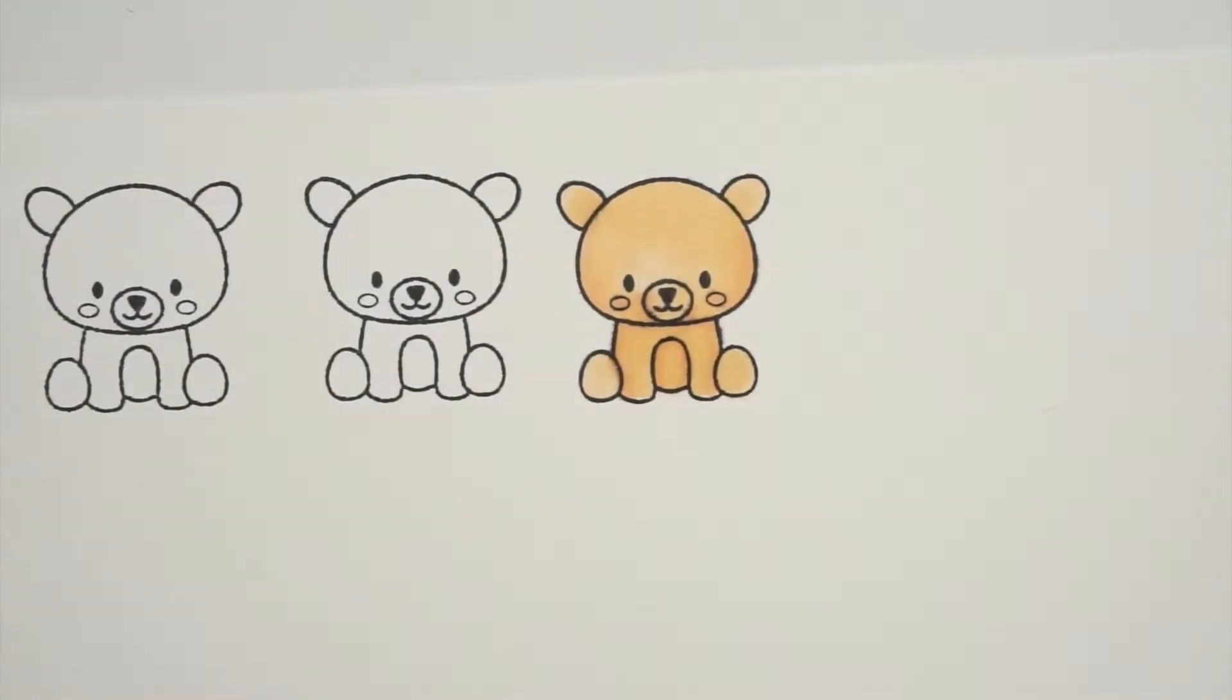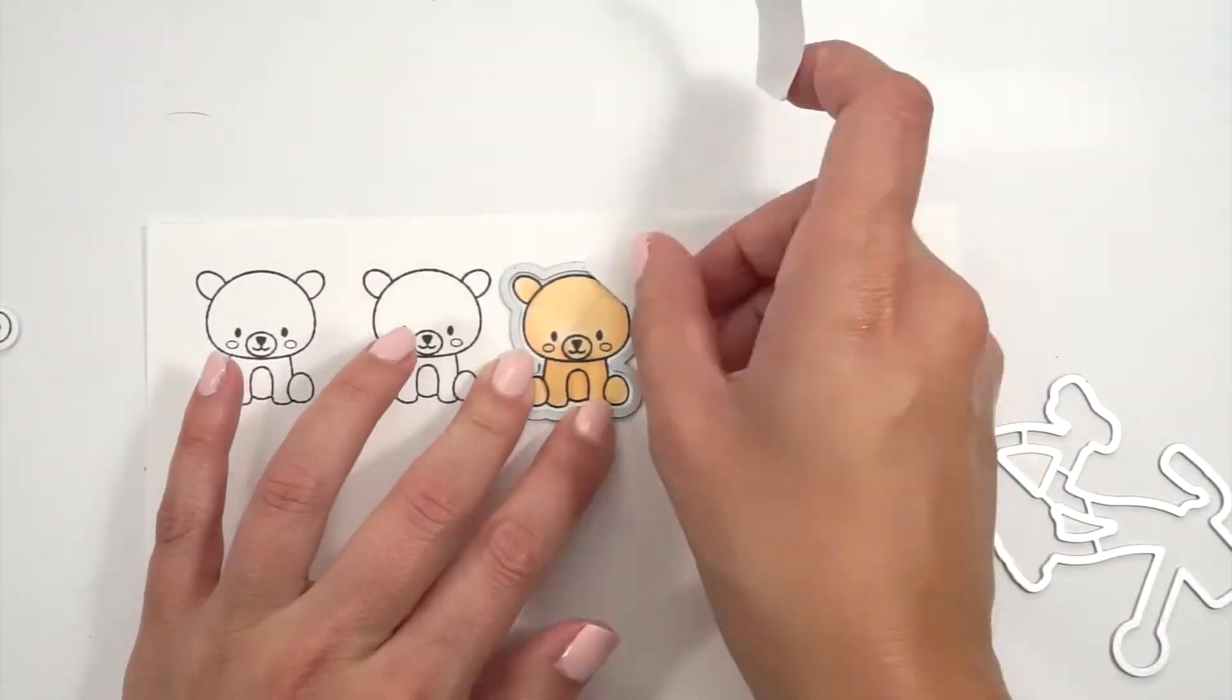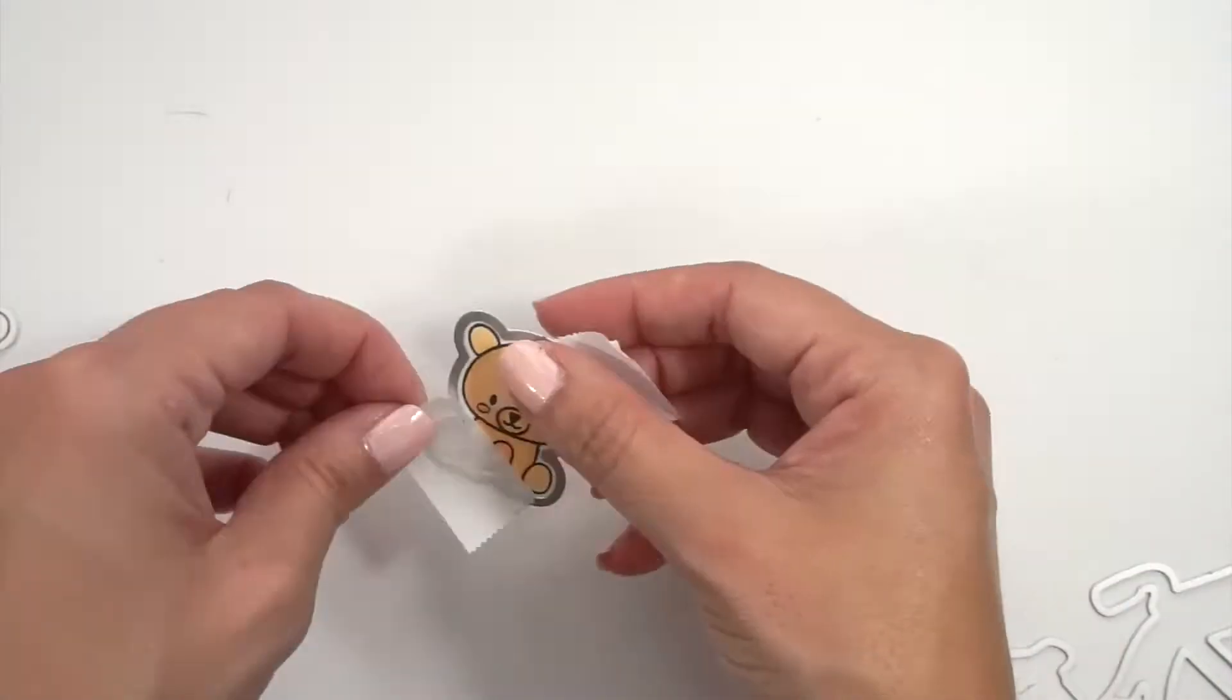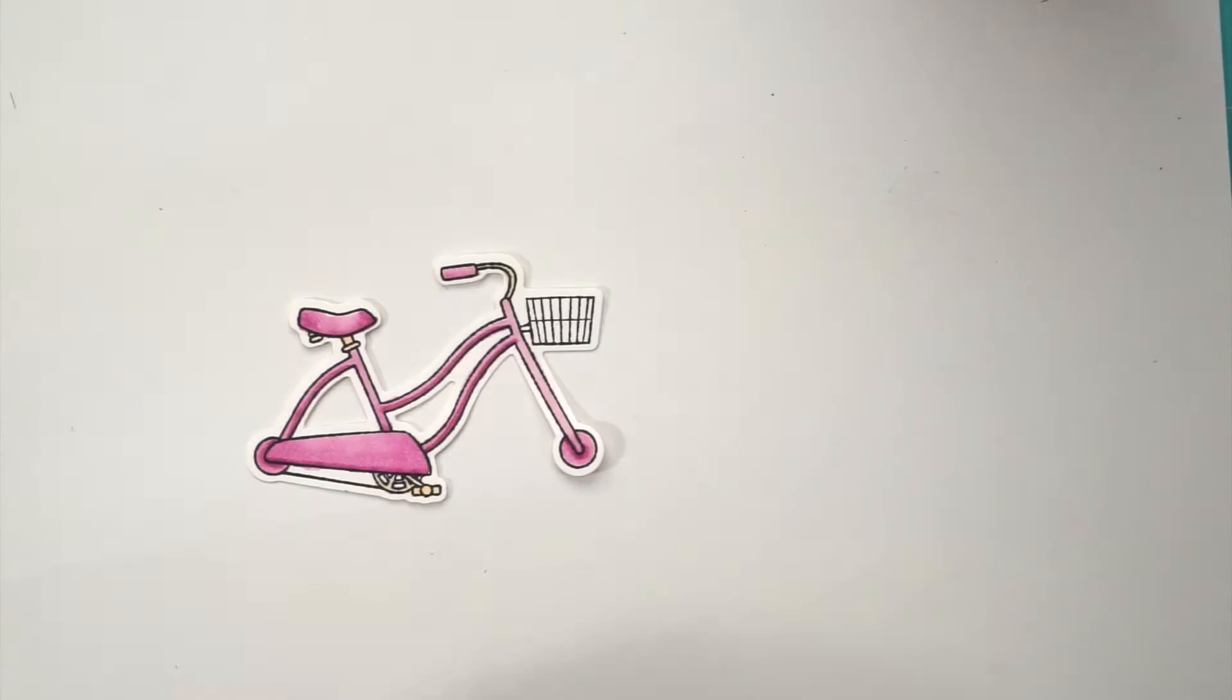Here I'm finishing up coloring the teddy. And now I'm going to die cut it. So now I have ready the teddy and the bicycle.